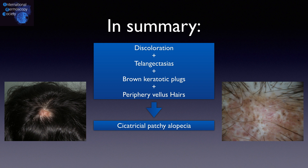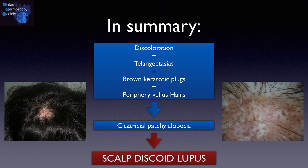In summary, a patch alopecia presenting with discoloration, telangiectasias, brown keratotic plugs, and vellus hairs in the periphery is suggestive of scalp discoid lupus.